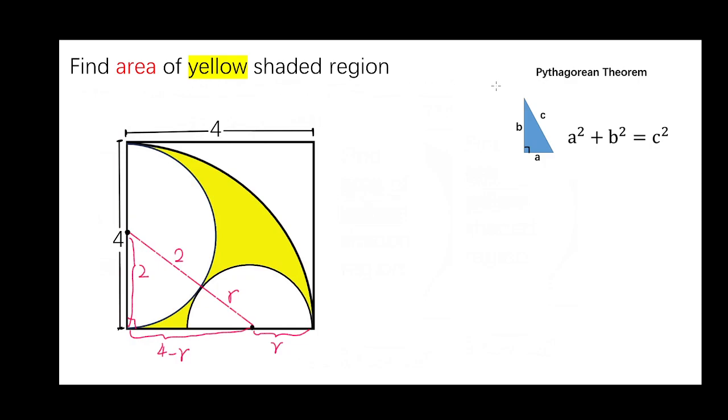According to Pythagorean theorem, we can get 2 squared plus 4 minus R whole squared equals to 2 plus R whole squared.